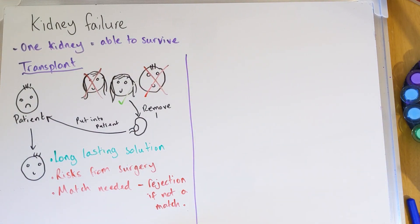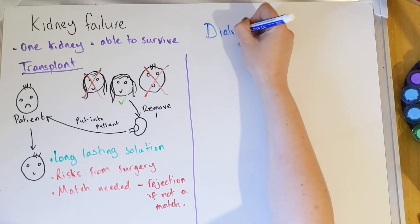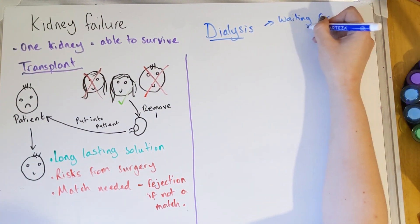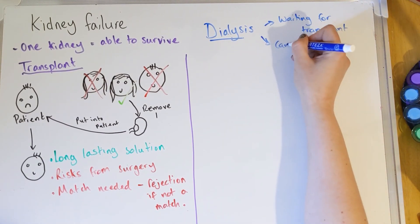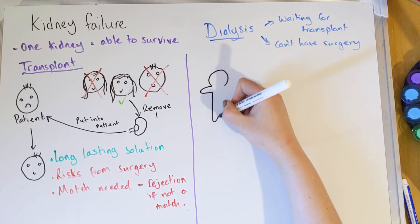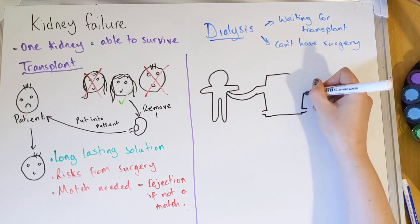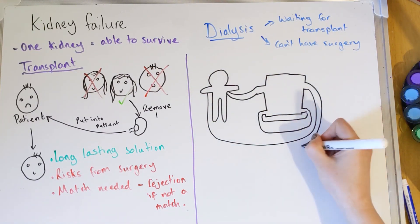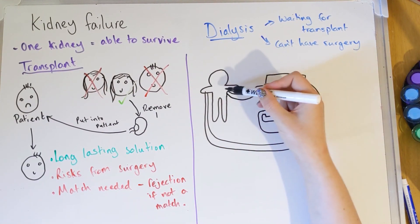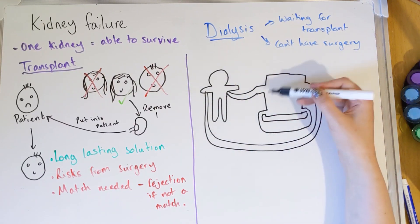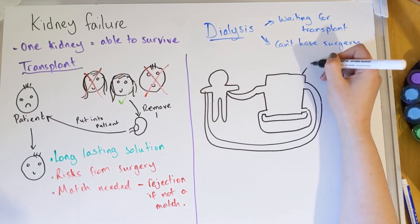The other treatment — more of a stop gap or shorter-term solution — is dialysis. In dialysis, the patient's blood is rerouted out of their body via a large blood vessel and put into a machine called the dialysis machine. The blood goes through the machine and then back into the body.